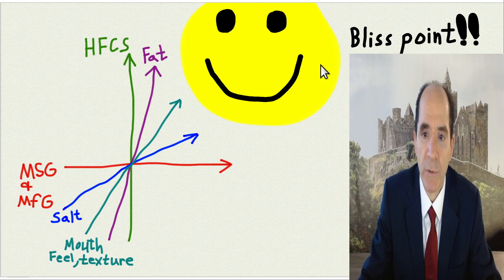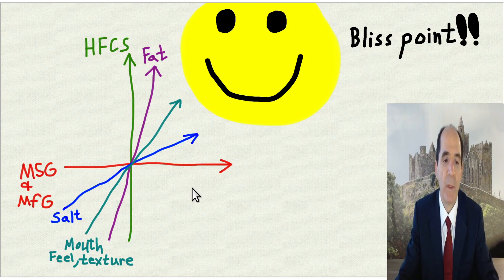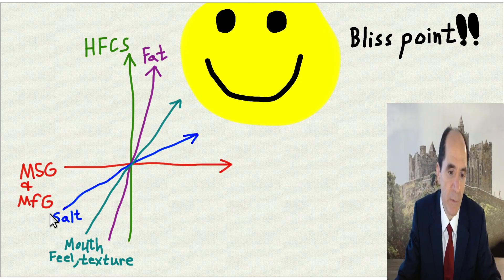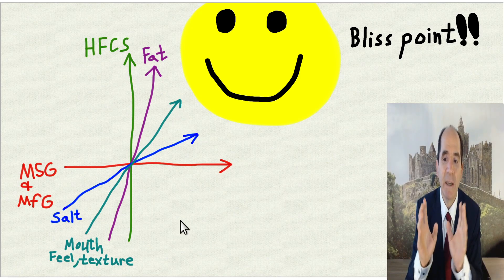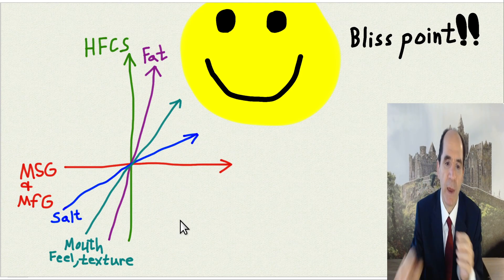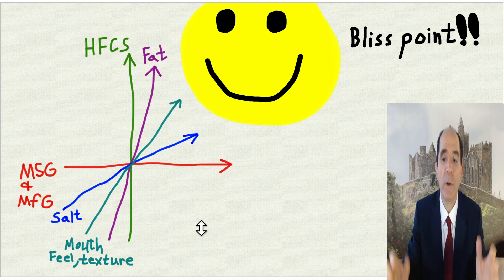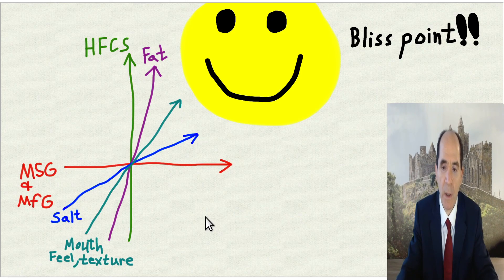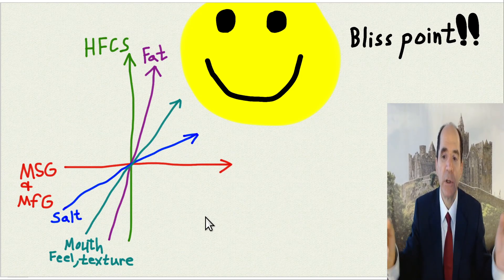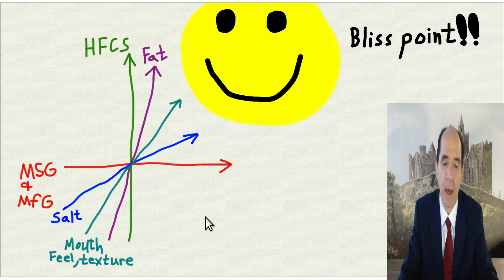Here is the concept of the bliss point. Food companies do research and titrate the amount of salt, MSG, monosodium glutamate, manufactured free glutamate, and high-fructose corn syrup fat to get it just right — they call it the bliss point of taste, with the right mouthfeel and texture. That's why Jay's Potato Chips said 'I bet you can't eat just one.' When they make something hyperpalatable, people overeat. The higher the percentage of calories from fat, the fatter the population gets.